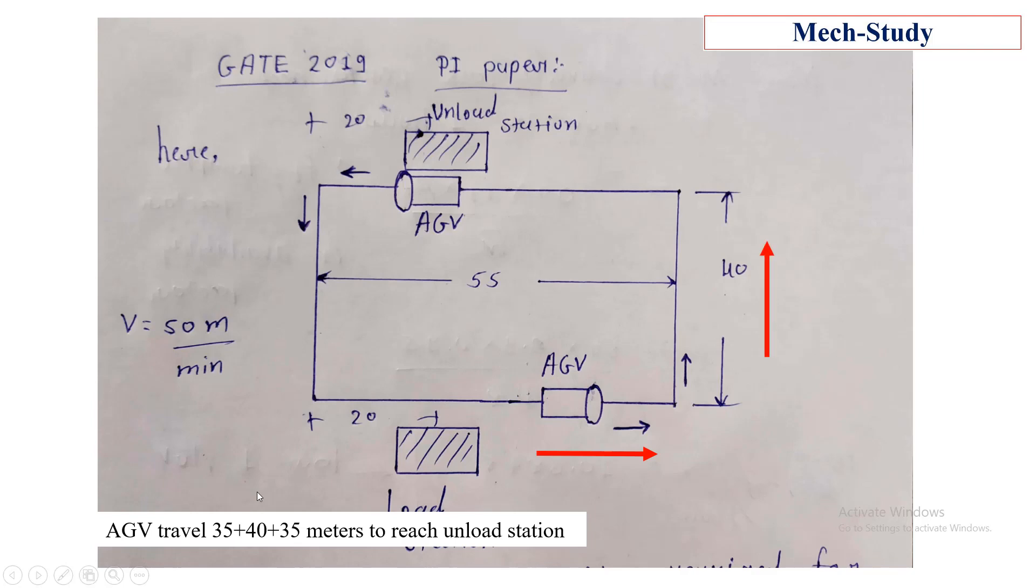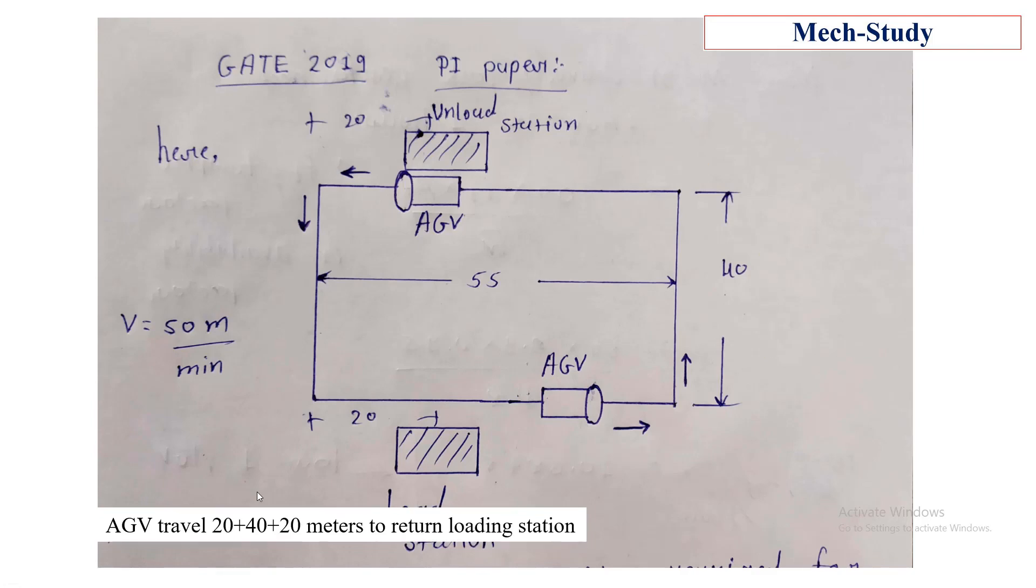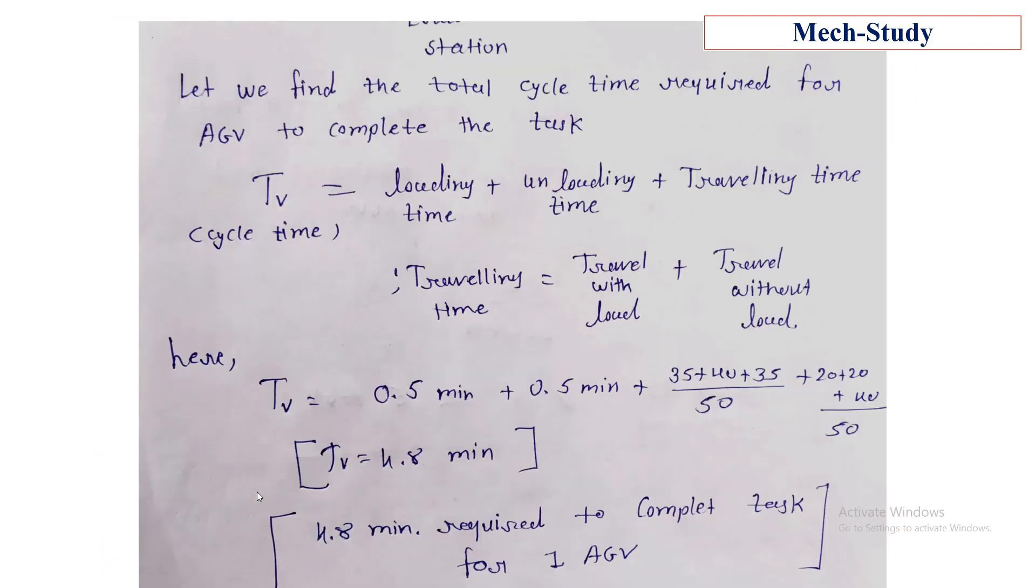Here you can see that the AGV travels 35 plus 40 plus 35 meters to reach the unload station, and travels 20 plus 40 plus 20 meters to return to the loading station.